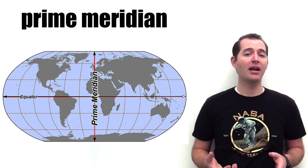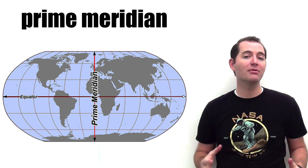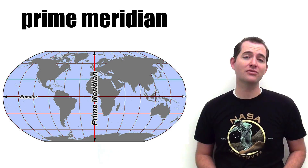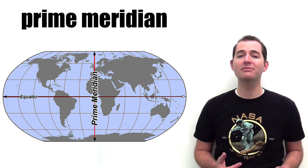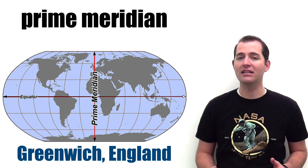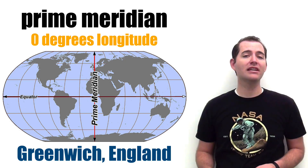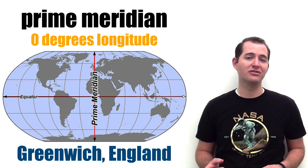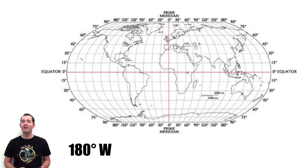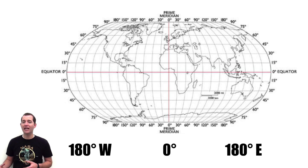One specific meridian or line of longitude is known as the prime meridian. The prime meridian passes through the Royal Observatory in Greenwich, England, and denotes zero degrees of longitude. Longitude on the earth can be measured from negative 180 degrees in the west to zero degrees at the prime meridian to 180 degrees in the east.